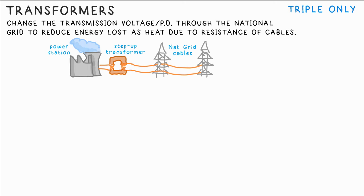Therefore a step up transformer increases the voltage before it enters the grid. This then reduces the current so less energy is lost due to heating. The reason one goes up while the other one goes down is because electrical power is equal to voltage or PD times current, V times I.